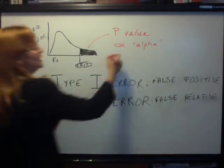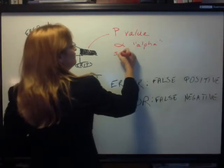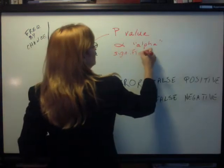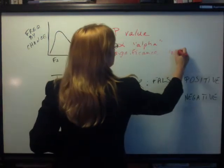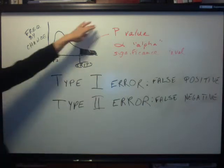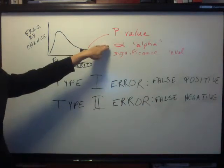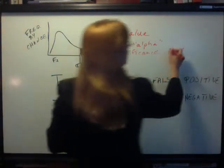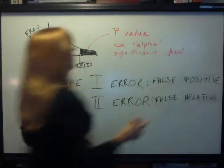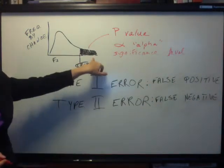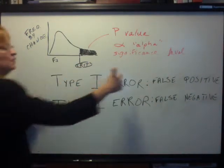Some people will call it a significance level. P is the same as alpha is the same as what people call a significance level. All it is is the probability that you're making this kind of error.